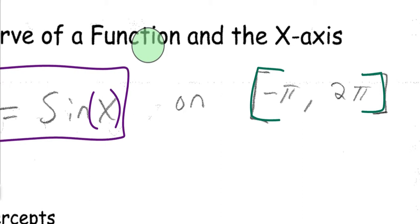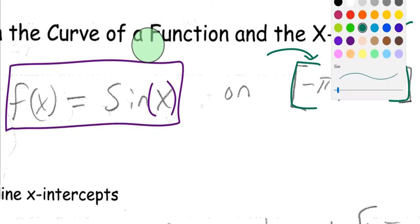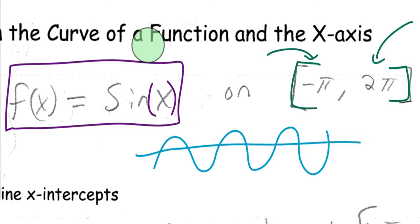Negative pi is going to be our leftmost x value and 2 pi our rightmost. With trig functions, as you probably know from graphing them, they oscillate, so very likely this graph is going to cross above and below the x-axis. We'll have to make whatever's below the x-axis positive to ensure we're finding the total area and not the net area or just the definite integral.